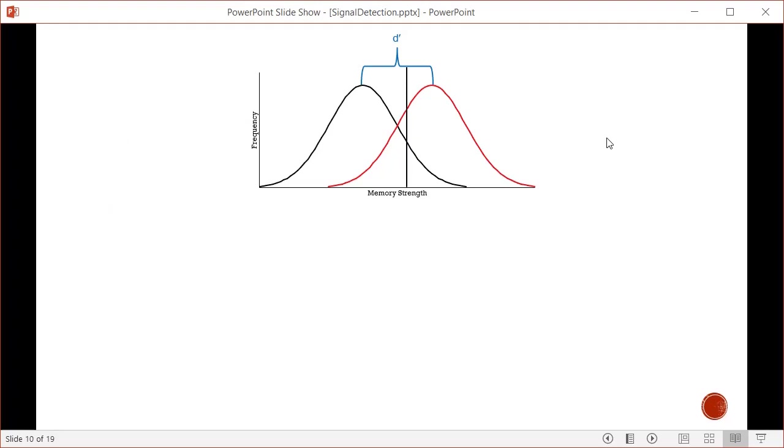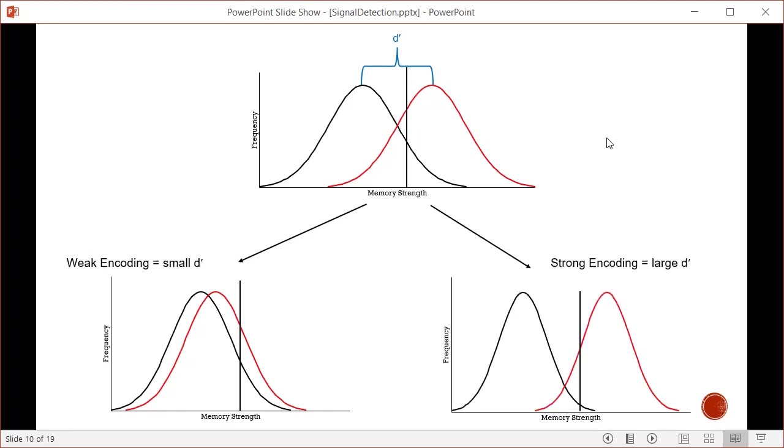D prime measures the difference between distributions. With weak encoding and small D prime, the distributions are much closer together. The old item distribution moves closer to the new item distribution. With stronger encoding, distributions get further apart with less overlap. The area for false alarms and misses is much smaller, and you'll have fewer errors because of the stronger encoding.